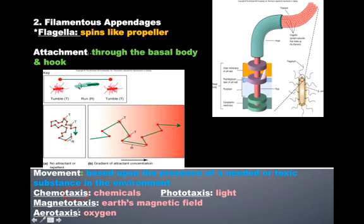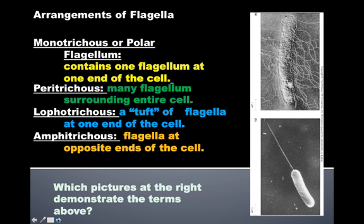We can classify bacteria based on the number of flagella they have and their arrangement. A single flagellum is considered monotrichus — 'mono' meaning one, also called a polar flagellum — where there's just a single flagellum at one end of the cell. Peritrichus is when there are many flagella surrounding the entire cell, going all the way around the perimeter.